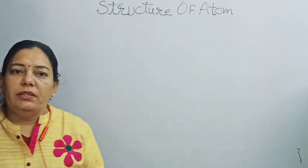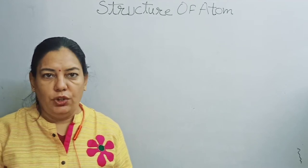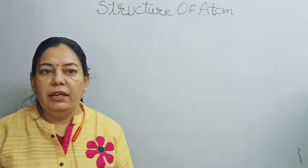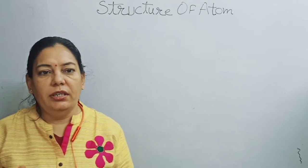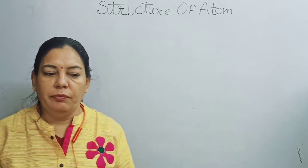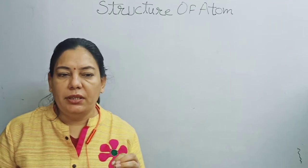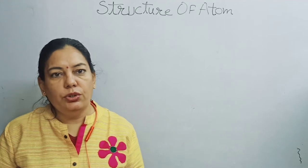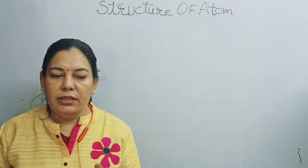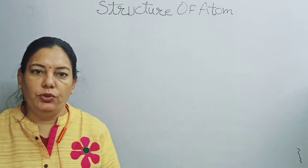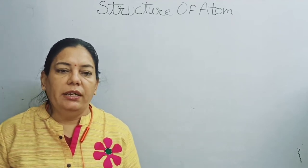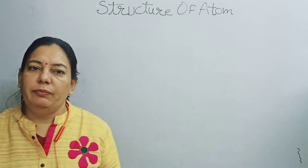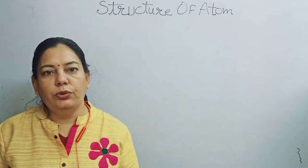In our previous videos, we studied Dalton's Atomic Theory. One postulate of this theory states that the atom is the smallest indivisible particle of matter — meaning that according to Dalton, the atom is structureless. But by the end of the 19th century, it was proved that the atom consists of three subatomic particles: electrons, protons, and neutrons.